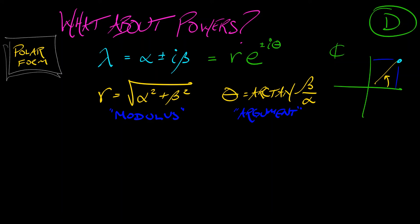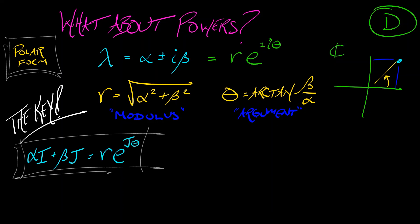And it's really the key because if I write out the matrix version of what is going on here, then what I get is alpha times the identity plus beta times J is really this modulus R times E to the J theta. And from the Euler formula, we can see how that is going to work. So what is this going to do for us? What this does for us is it says that if we want to take alpha I plus beta J, raise it to the nth power, then what we really do is we take R E to the J theta, raise that to the nth power.